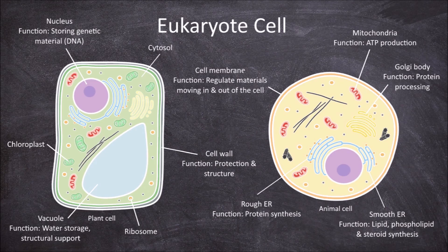Animal cells have a pair of centrioles which are involved in cell division. Plant cells do not have centrioles.